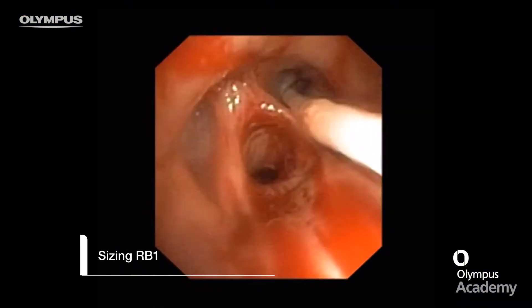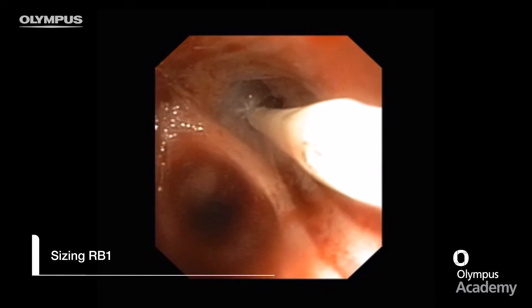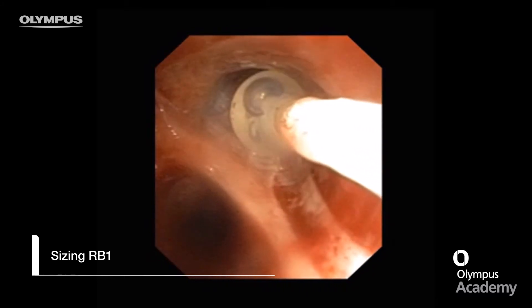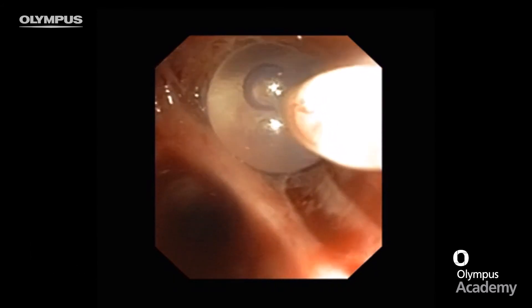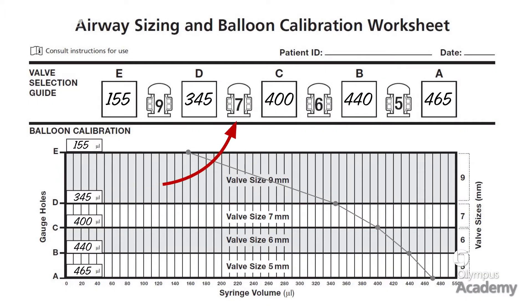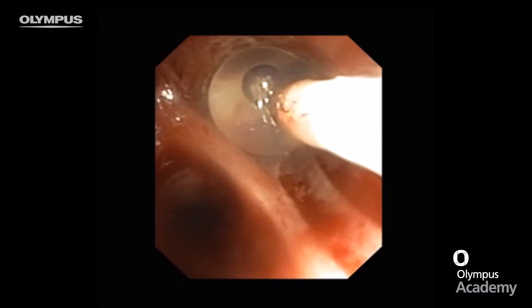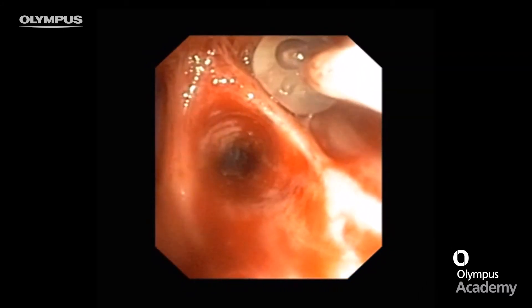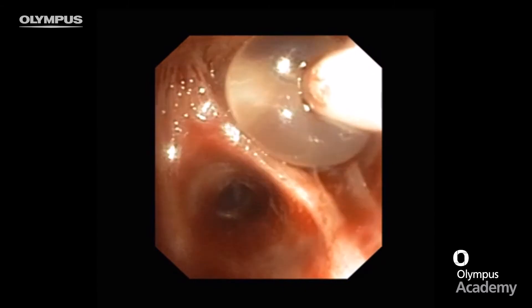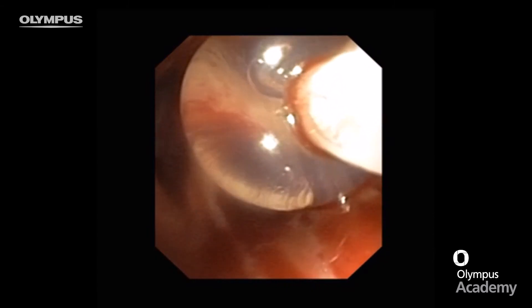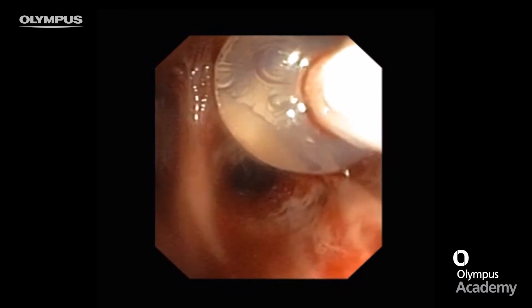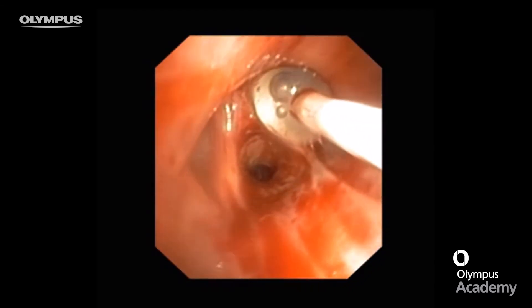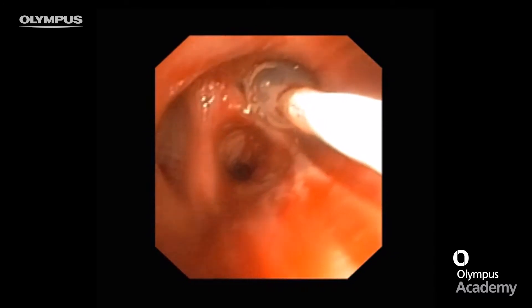To streamline airway sizing, and keeping in mind that the majority of airways are size 7 or greater, I inflate the balloon in RB1 to the upper limit of size 7, which is 345 microlitres. The balloon completely occludes RB1 and fits snugly but I can still move it in and out. To double check, I inflate to the upper limit of size 9, which is 155 microlitres, but this is clearly too big, so I deflate back down to size 7 at 345 microlitres to reconfirm the correct fit.